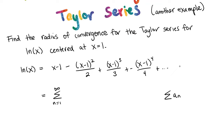We can see that we have a positive-negative alternating pattern going on. The first term is positive, the second term is negative, the third term is positive, the fourth term is negative. So that means we have a negative 1 to the either n or n plus 1. When n equals 1, that gives us negative 1 to the 1 plus 1, or negative 1 squared, which makes the first term positive. So we need negative 1 to the n plus 1, rather than negative 1 to the plain n.